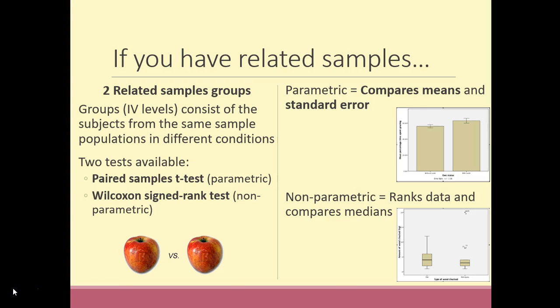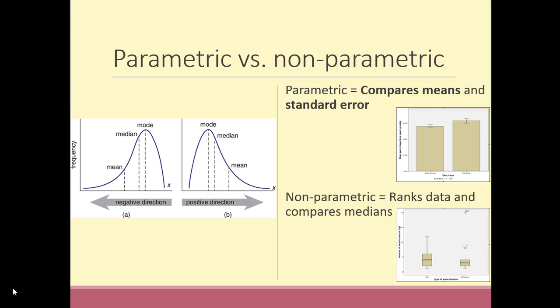If you run a parametric test on skewed data you risk getting misleading results, such as a false positive. This is because means can be strongly influenced by skew, meaning the mean is no longer an accurate measure of central tendency. Because medians are little affected by skew, if you have skewed data it's better to use a test that compares medians.